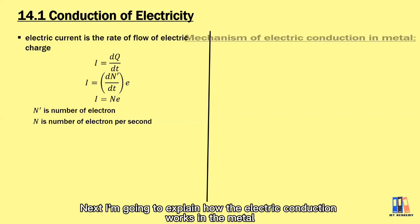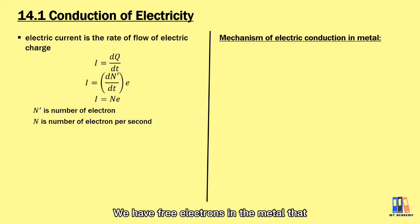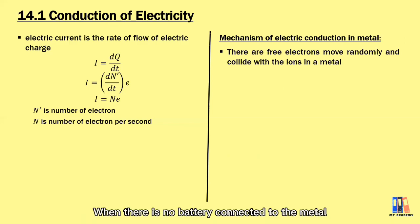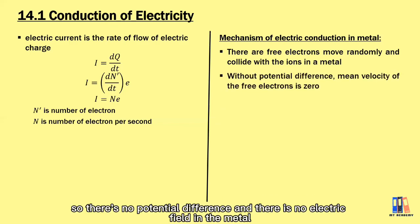Next, I will explain how electric conduction works in a metal. We have electrons in the metal that move randomly and collide with the ions in the metal. When there is no battery connected to the metal, there is no potential difference and no electric field in the metal.